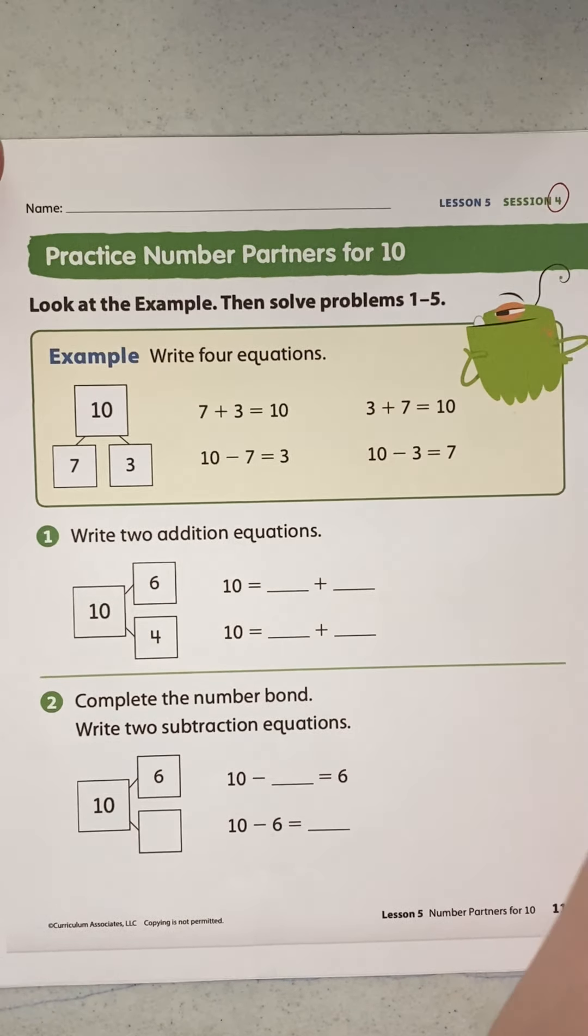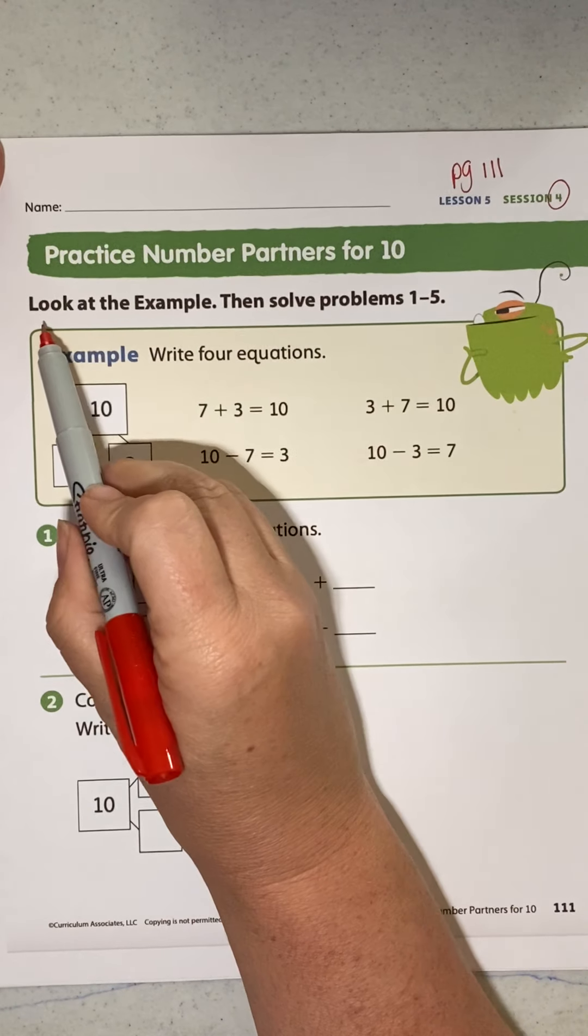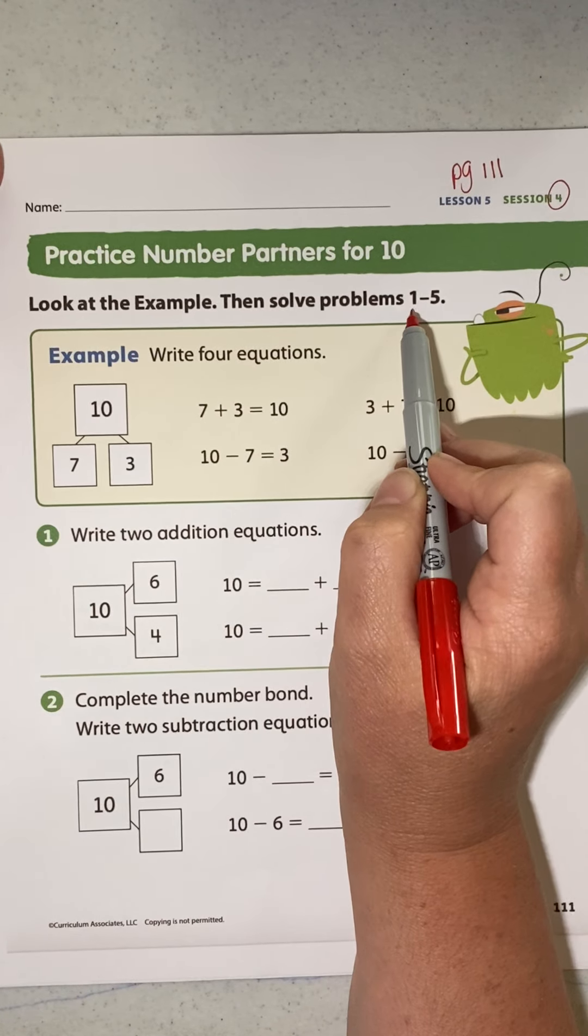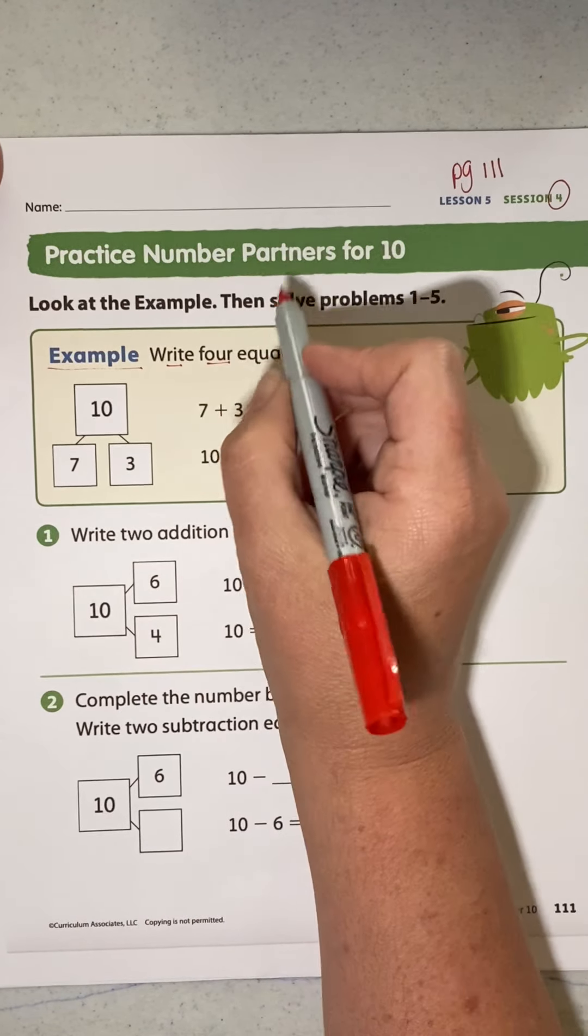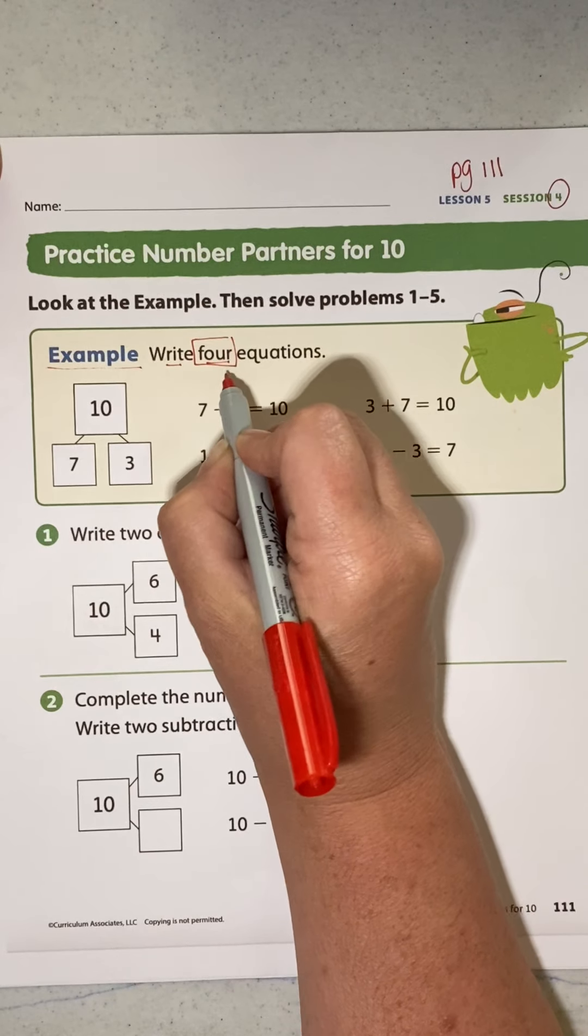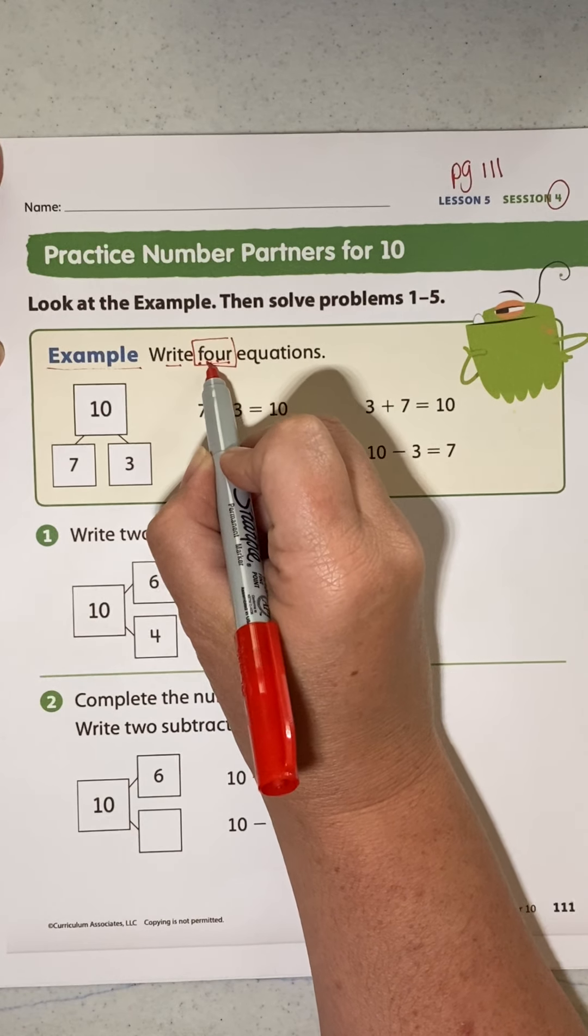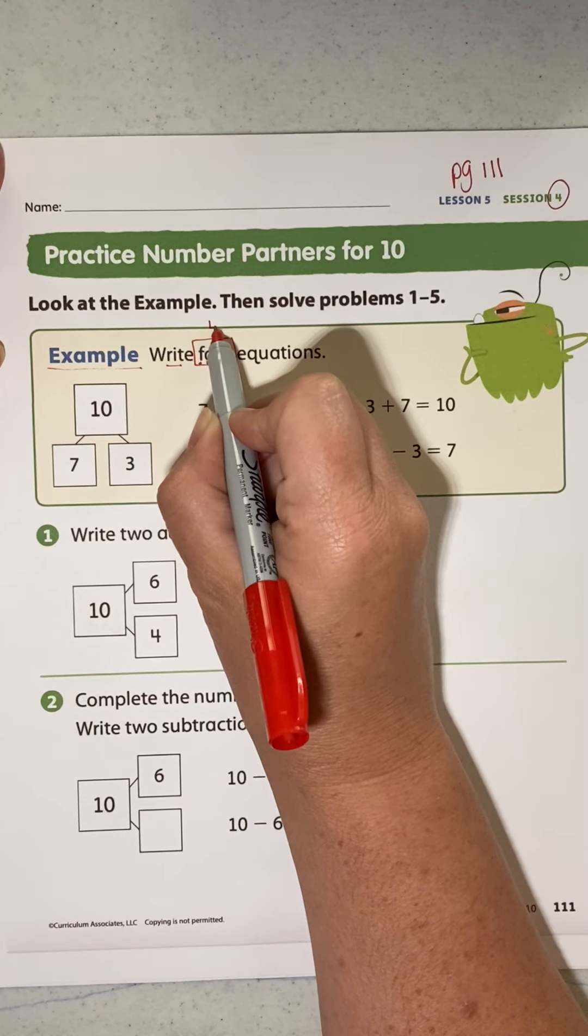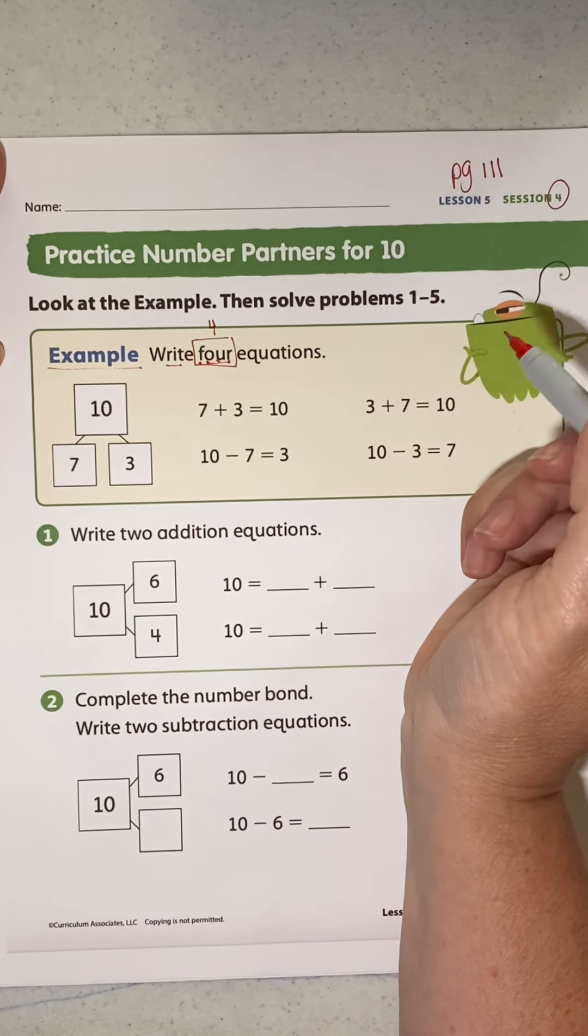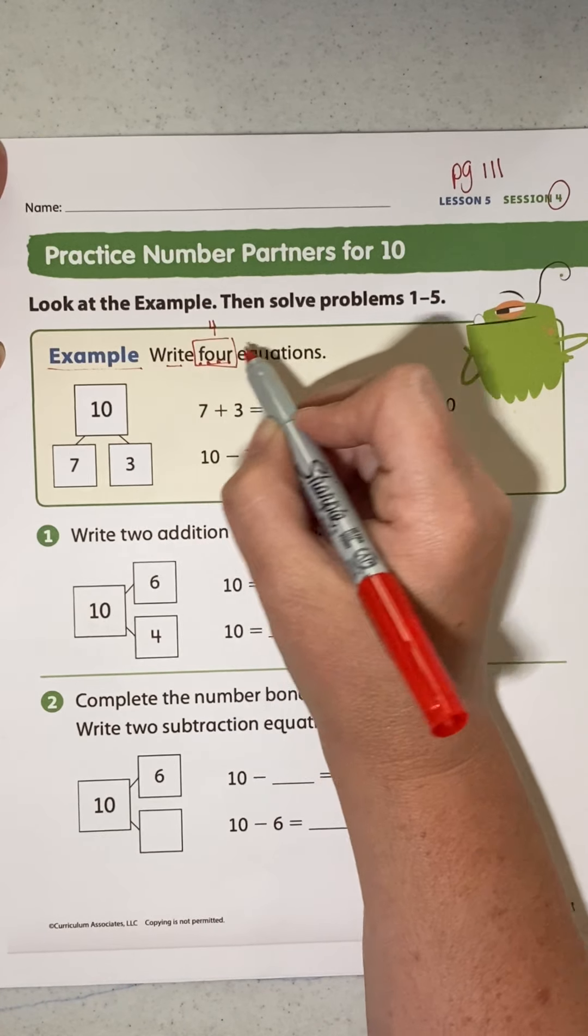Lesson 5, session 4, page 111. Practice number partners for 10. Look at the example, then solve problems 1 through 5. Example: write four. We're gonna sing the number four song. F-O-U-R that spells number four. F-O-U-R that spells number four. Number four, number four, get that mop and shine the floor. F-O-U-R that spells number four. Right four equations.